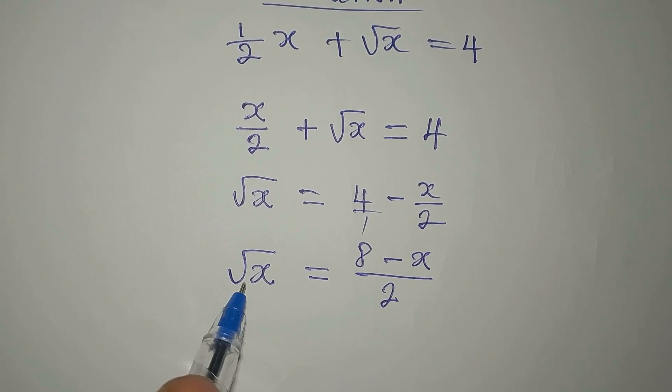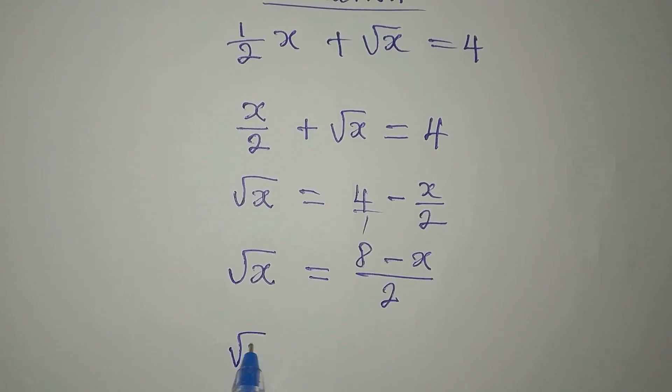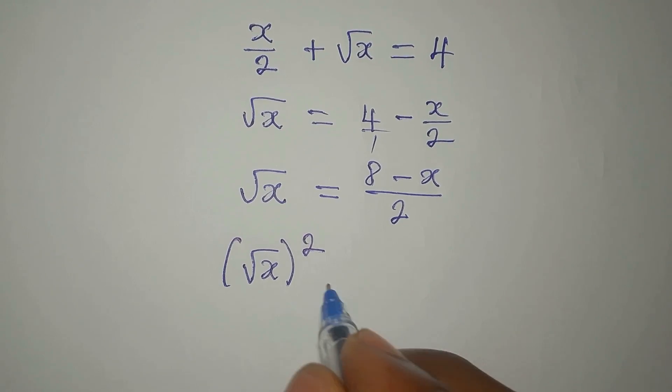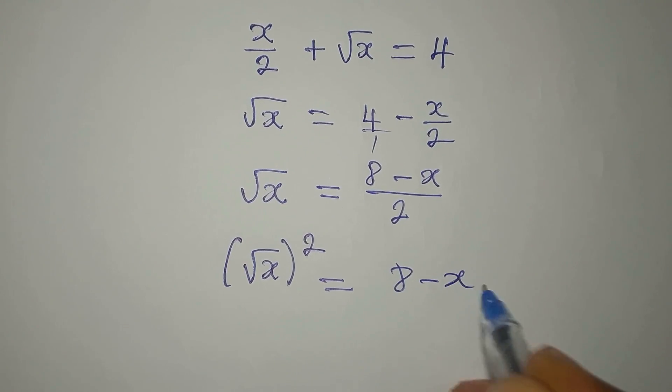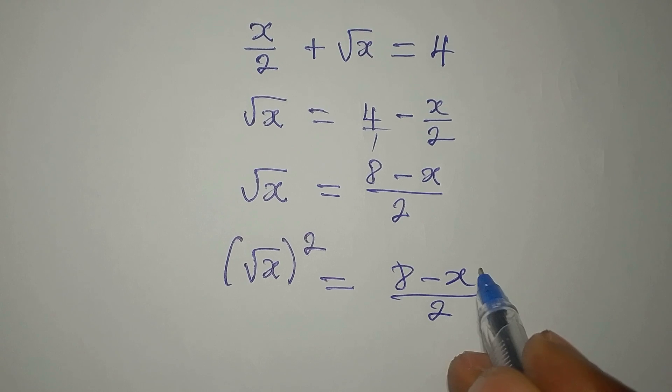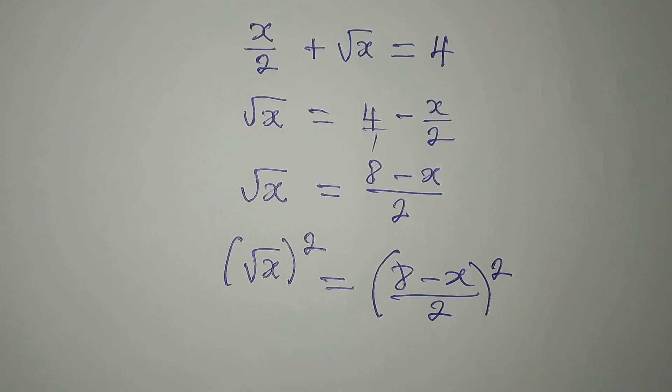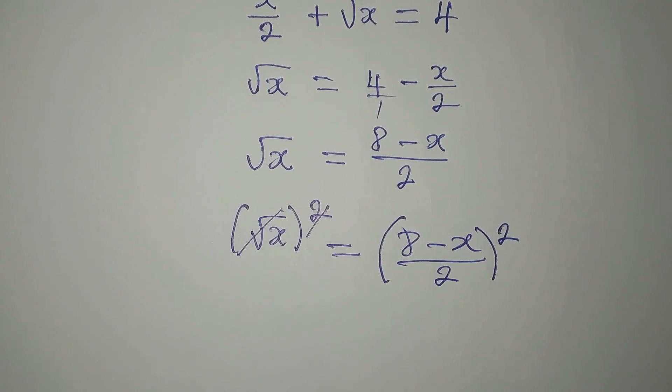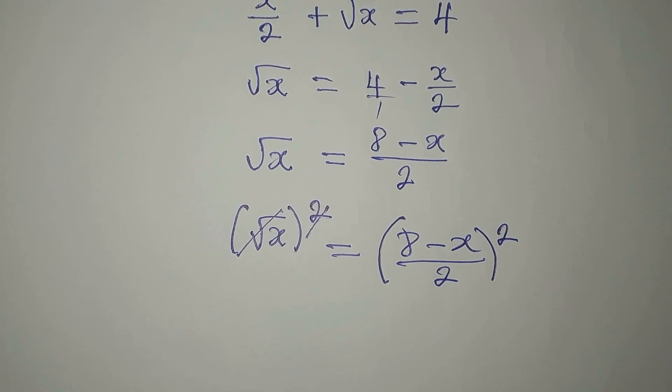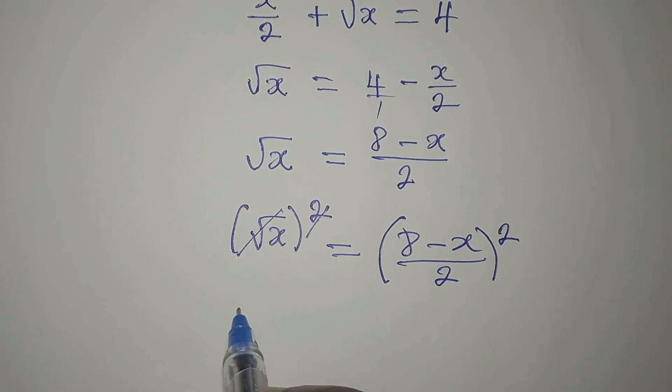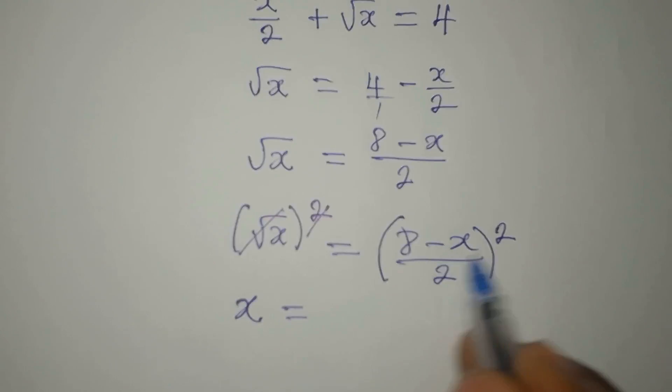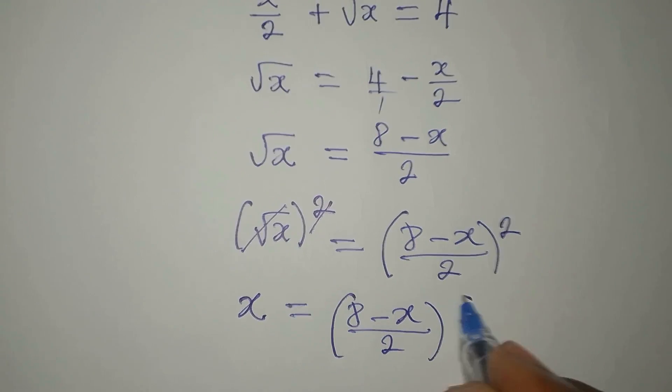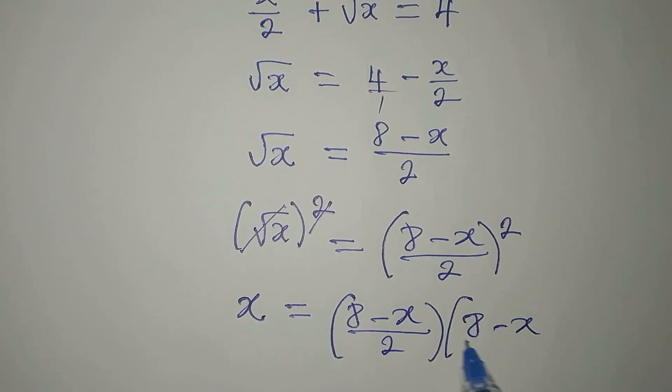And the next target is to remove the square root. We have square root of x, we're going to square it. That is the only way you can remove square root. Then on the other hand, we have 8 minus x over 2, and the whole of this will be squared since we have already squared the left hand side. So now we have x equal to this in two places: 8 minus x over 2 multiplied by 8 minus x over 2.